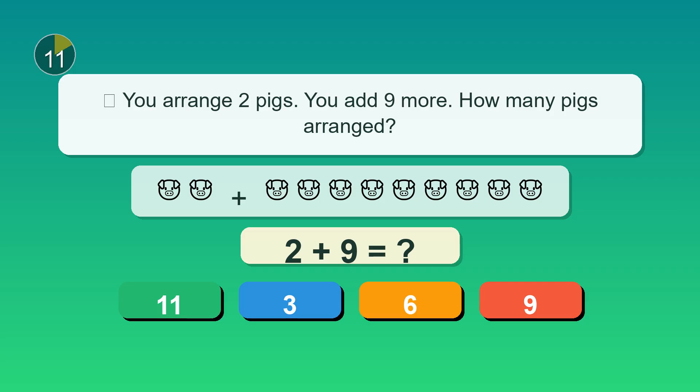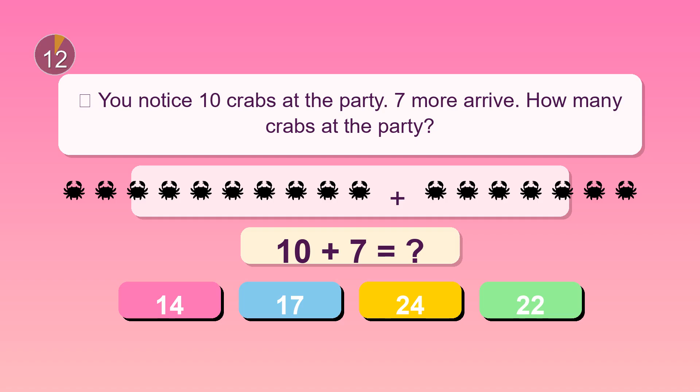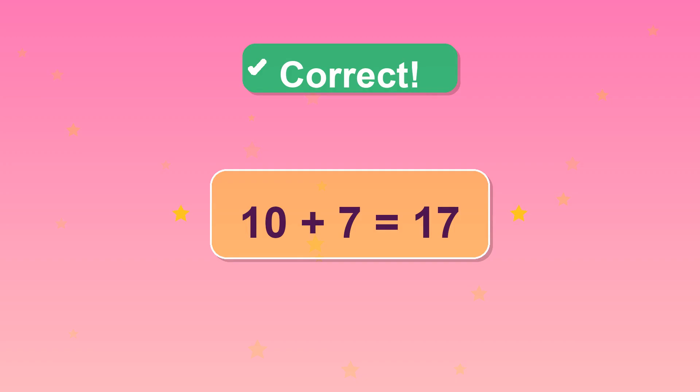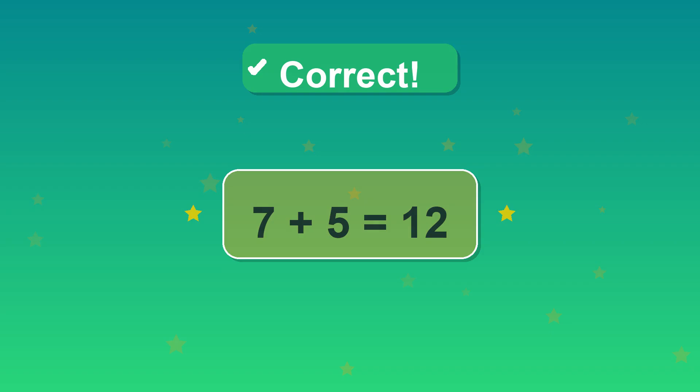You arrange two pigs. You add nine more. How many pigs arranged? Correct. 11. You notice ten crabs at the party. Seven more arrive. How many crabs at the party? Yep. 17. You count seven pencils in a row. You add five more to the row. How many pencils now? 12. Fantastic.